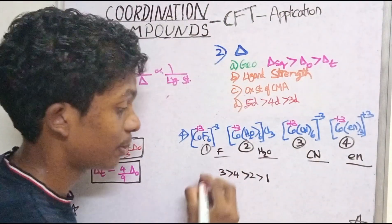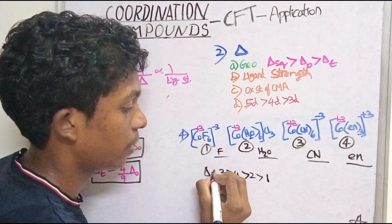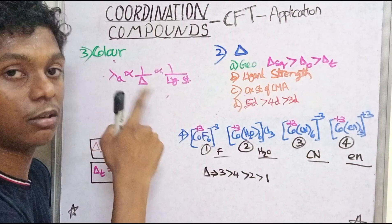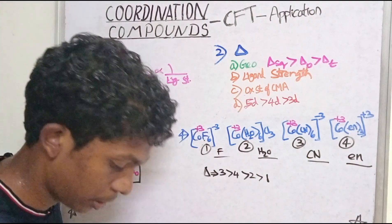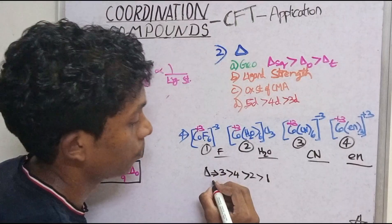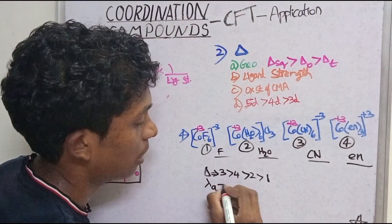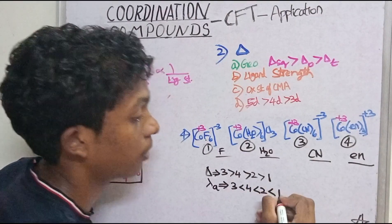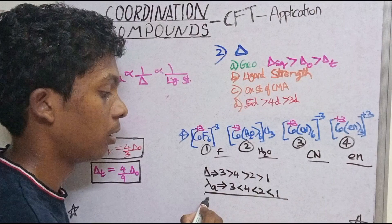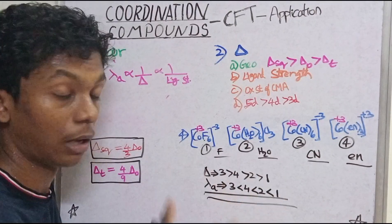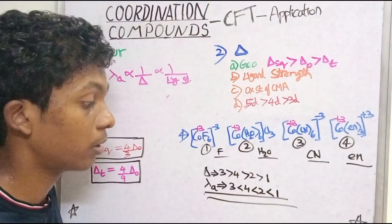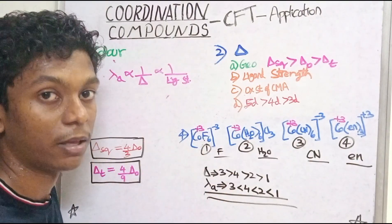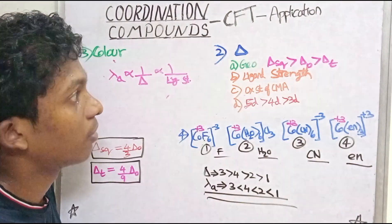Therefore the splitting energy order is: 3 > 4 > 2 > 1. And since lambda-a is inversely proportional to splitting energy, the lambda-a (wavelength absorbed) order is: 1 > 2 > 4 > 3. The complex color (lambda-c) is the complementary color of lambda-a for each compound.